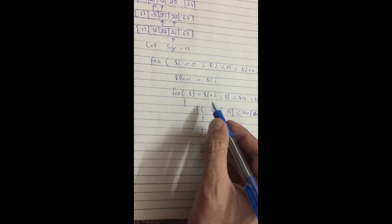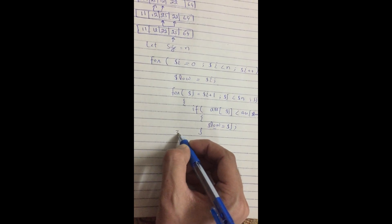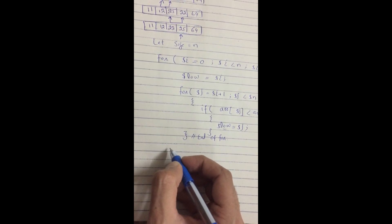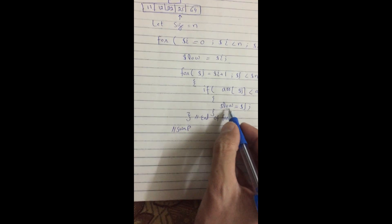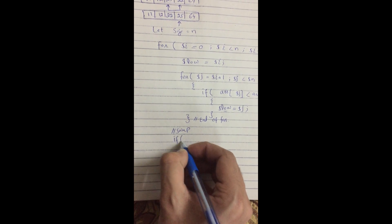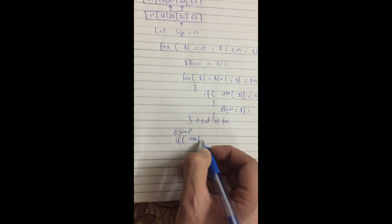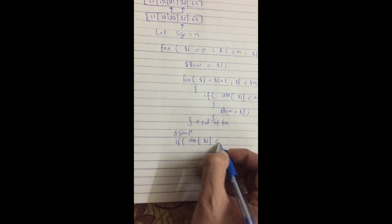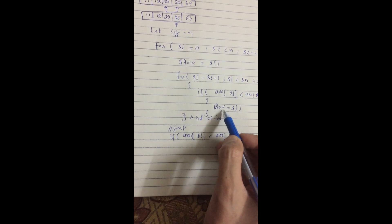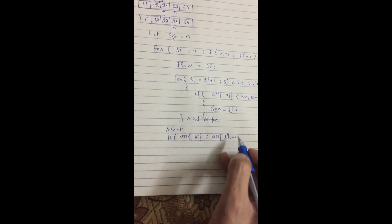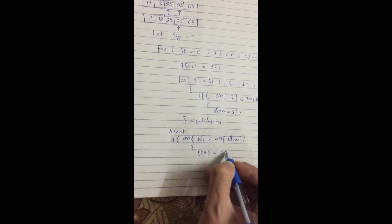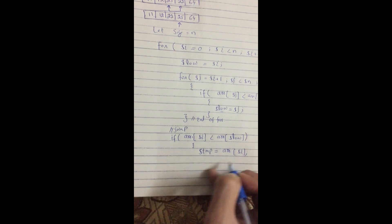After the inner for loop closes, outside the inner loop but inside the outer loop, we perform the swap. We check if array[i] < array[low] — meaning the current index is not already the minimum — and if so, we swap. The swapping code is straightforward: declare a temporary variable and assign it the value of array[i].